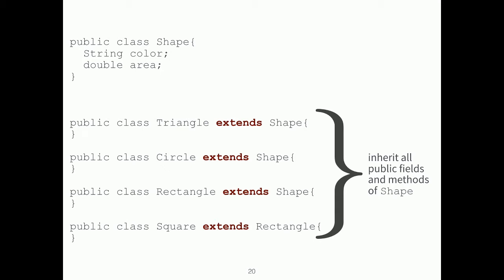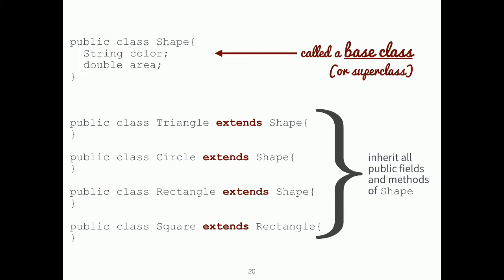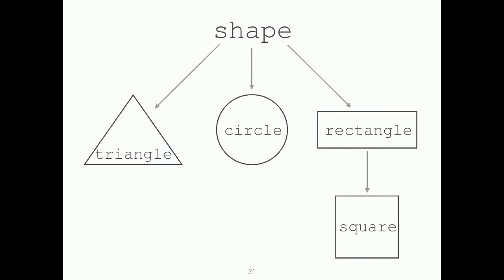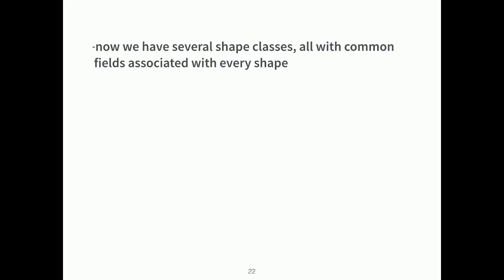Here's a visual diagram: Triangle, Circle, and Rectangle all extend Shape directly, and Square extends Rectangle. So that's where we're at with our example. Here's the inheritance hierarchy for our shapes.